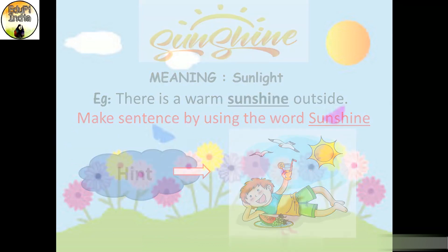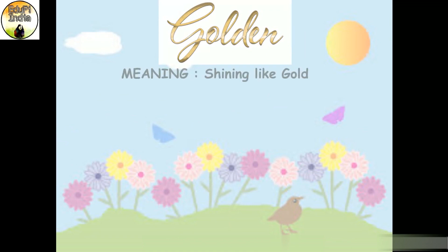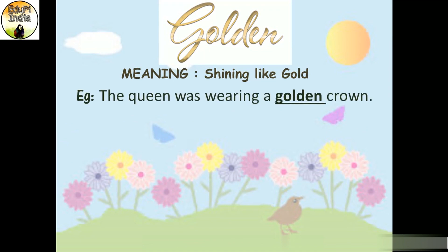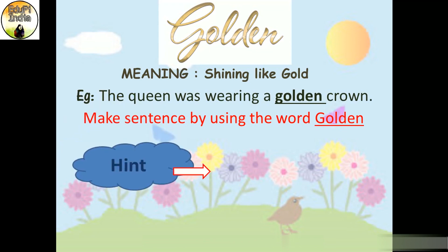The next word is 'golden.' If you love to draw, then you must have used the golden color in your drawing. Its meaning is shining like gold. For example, the queen was wearing a golden crown. Now students, can you make a sentence using this word 'golden'?